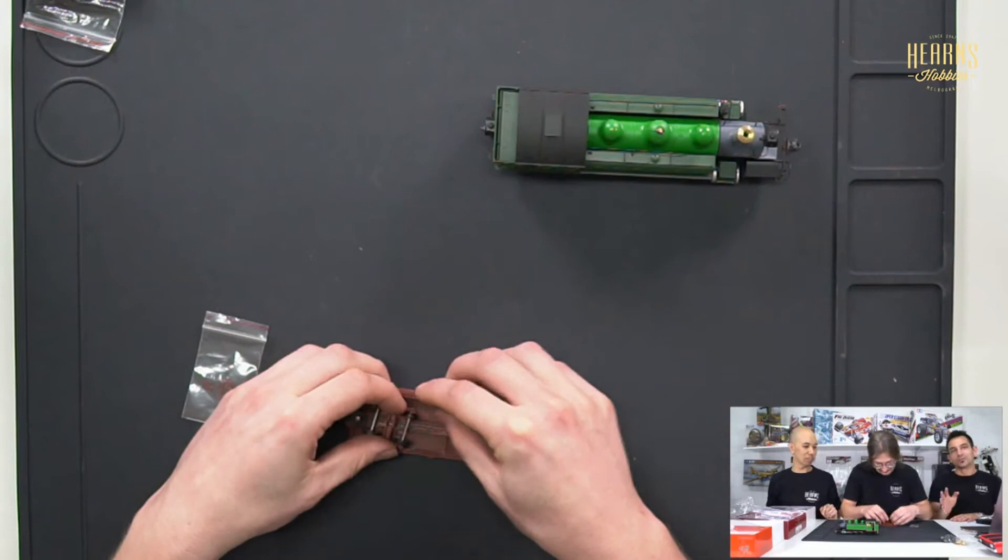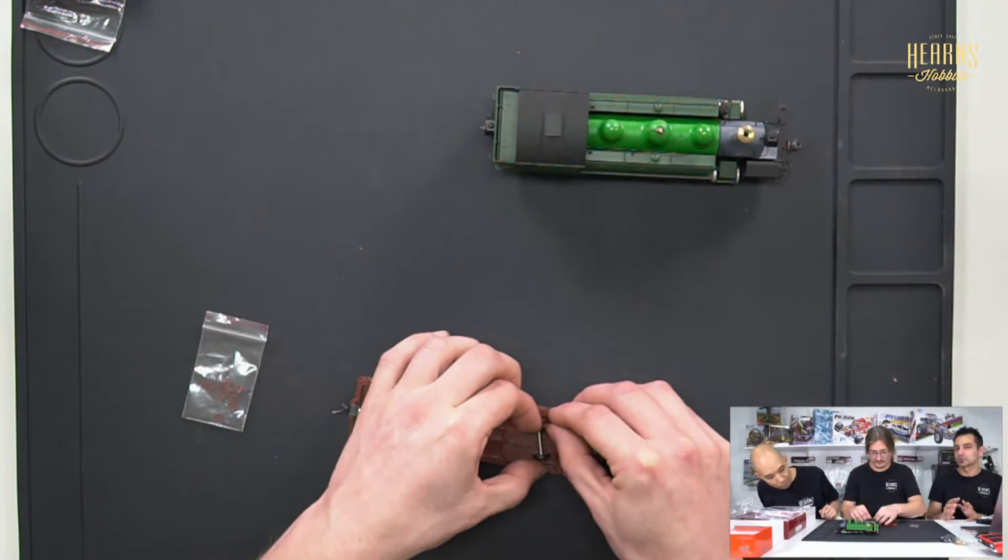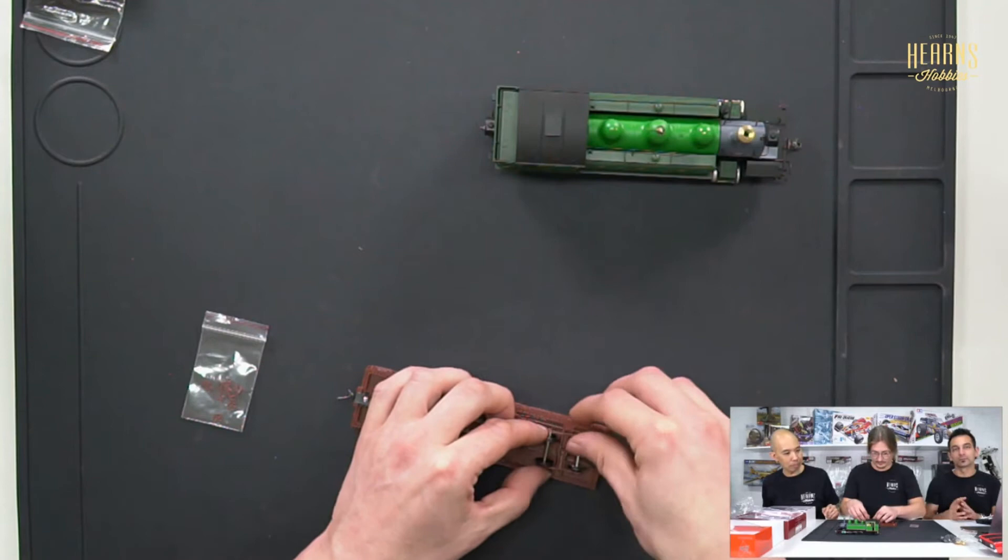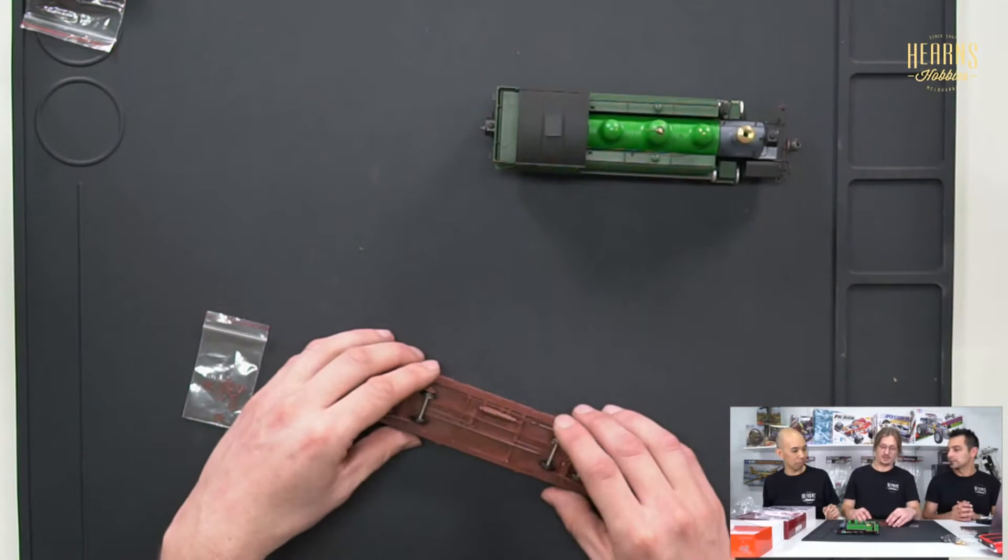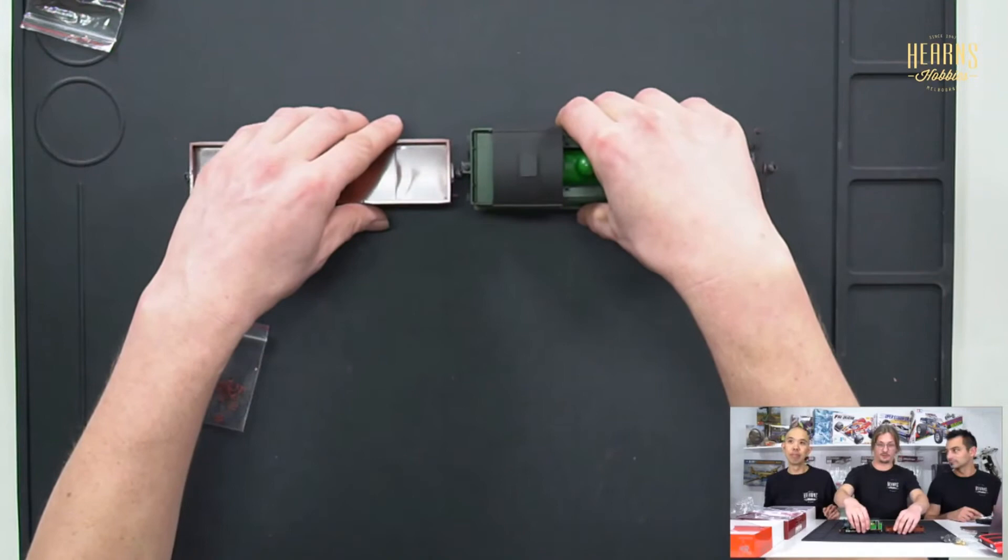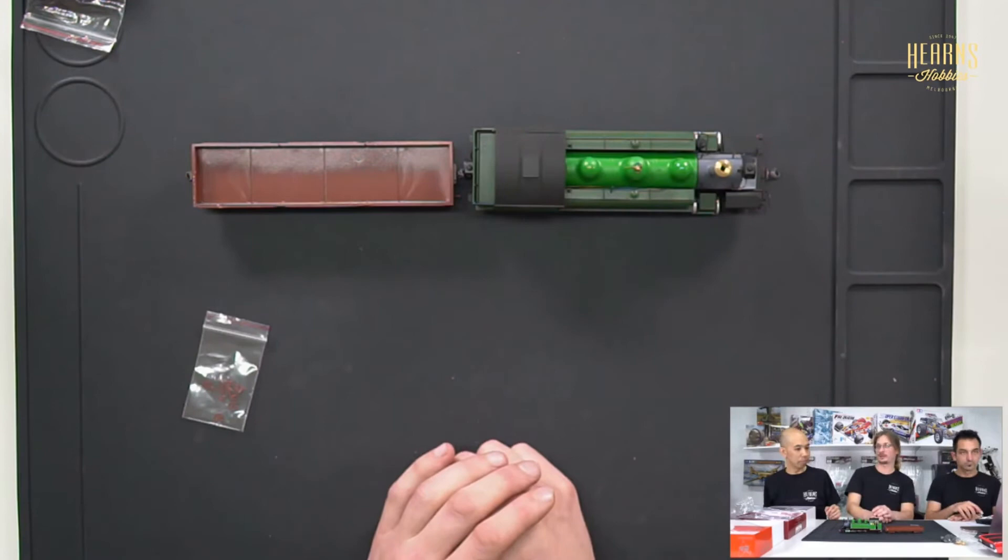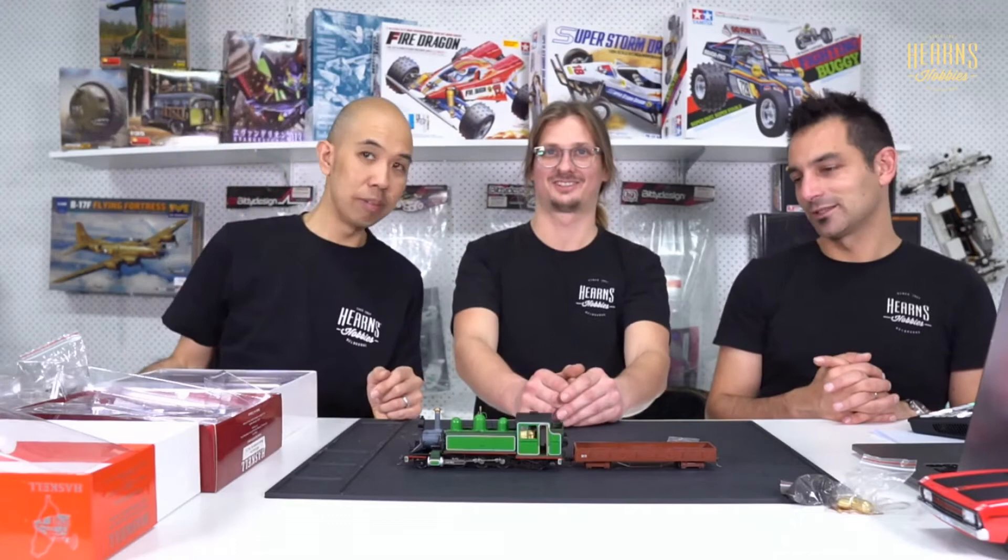For those that are new to this, narrow gauge O30 will run on HO or OO scale track, which is probably one of the most common gauges. The track width won't be to scale, but if you run HO or OO scale equipment, this will work. You might have issues with tunnel clearances and platforms if you've already put that sort of thing in place, but effectively if you just have an oval of HO or OO track, this will work perfectly on that.